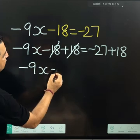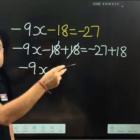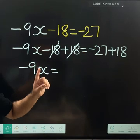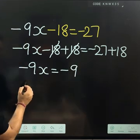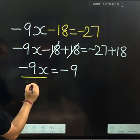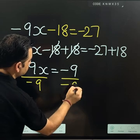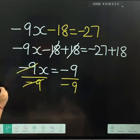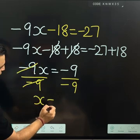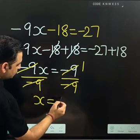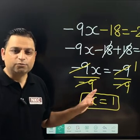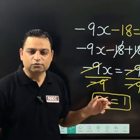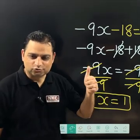-9x is equal to -27 + 18. -27 + 18 is -9. Now divide by -9 on both sides. This -9 and -9 is cancelled. Here also -9 and -9 cancelled, and my final answer is 1. I hope you have found it easy and you are able to understand it. Thank you so much for watching.